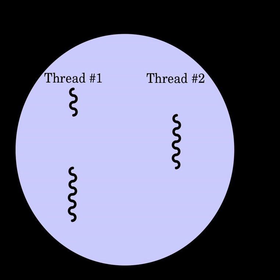Synchronization: since threads share the same address space, the programmer must be careful to avoid race conditions and other non-intuitive behaviors. In order for data to be correctly manipulated, threads will often need to rendezvous in time in order to process the data in the correct order. Threads may also require mutually exclusive operations, often implemented using mutexes, to prevent common data from being read or overwritten in one thread while being modified by another. Careless use of such primitives can lead to deadlocks, livelocks, or races over resources.